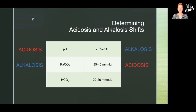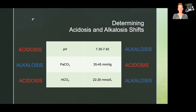Finally, with bicarbonate it switches back, so that anything less than 22 trends toward acidosis and anything more than 26 trends toward alkalosis. It doesn't really matter what order you memorize these values in — just make sure you know the normal values and which direction you're trending toward if it's not normal.